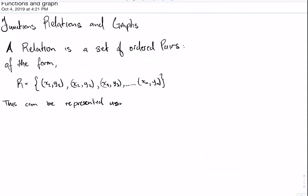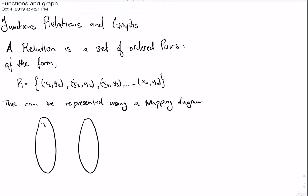It's important to note that we can show our relation using what we call a mapping diagram. In one column, we have all the X coordinates, and in the other column, we have all the Y coordinates. Once we have each X corresponding with a Y value, then we say that these pairs form a relation.